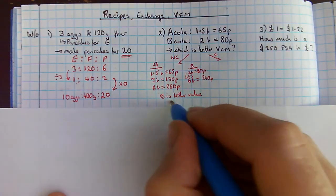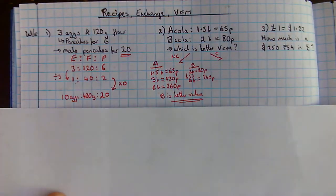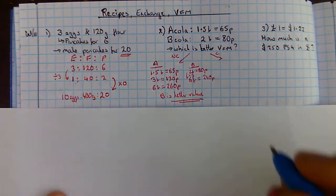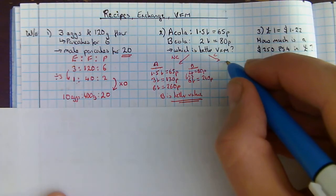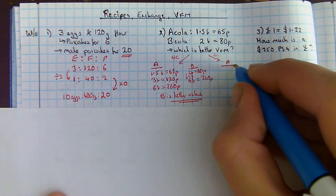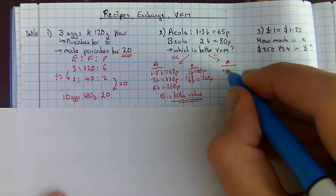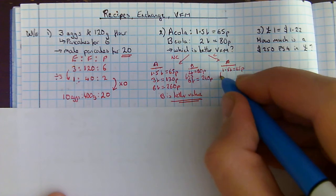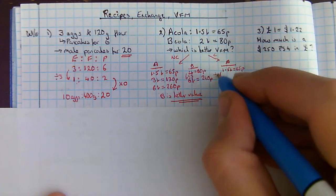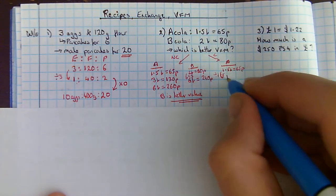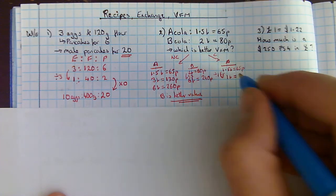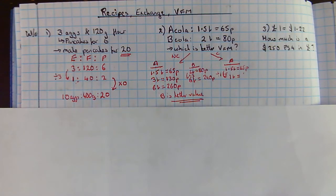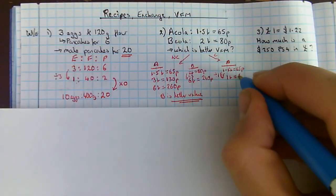And that's my non-calculator method for doing it. Calculator is much easier. I'm going to use a unitary method. 1.5 litres is 65p. Divide by 1.5 to tell me what 1 litre costs.